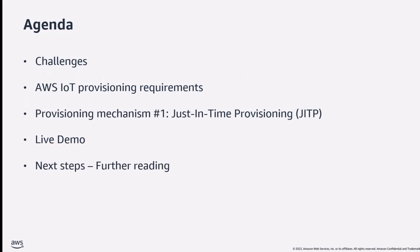The agenda is as follows. We start with a reminder on what device provisioning is and why it matters. Then we'll recall the requirements for a device fleet to exchange messages securely and scale with AWS IoT Core, our managed MQTT broker service. After that, we dive deep on JITP — how it works and the best use cases for this provisioning mechanism. We'll continue with a live demo available on our AWS GitHub account, so you can check the links in the comments.